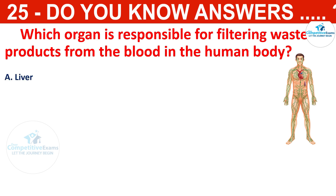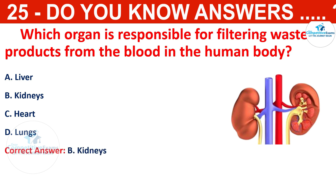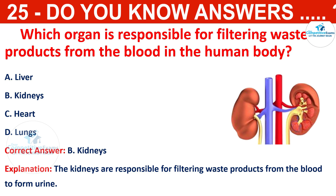Which organ is responsible for filtering waste products from the blood in the human body? The options are liver, kidneys, heart, or lungs. The correct answer is kidneys. The kidneys are responsible for filtering waste products from the blood to form urine.